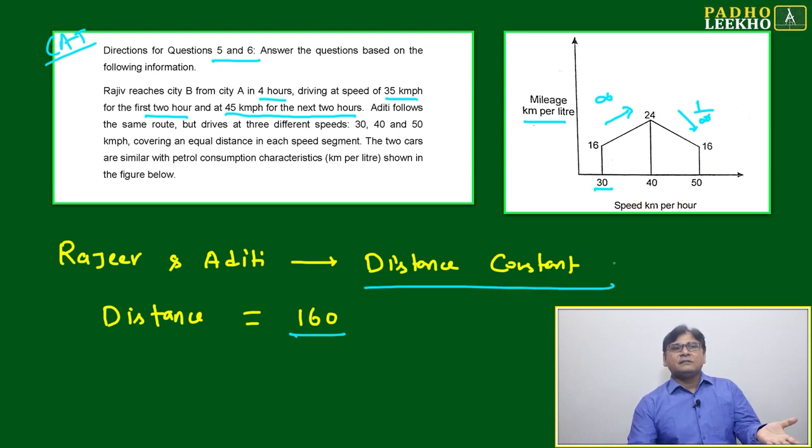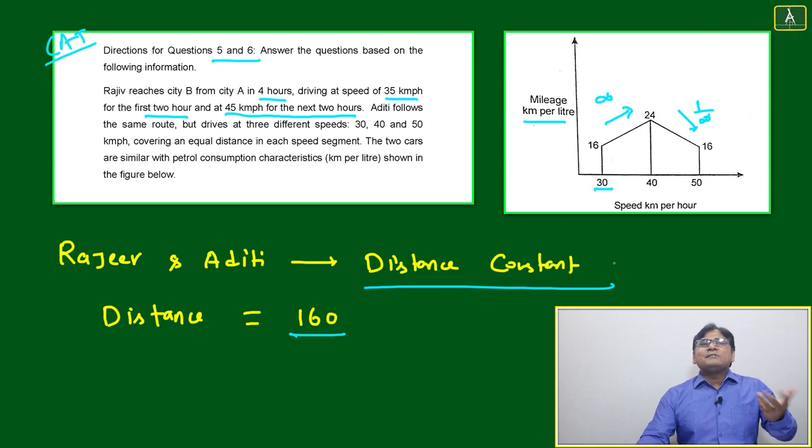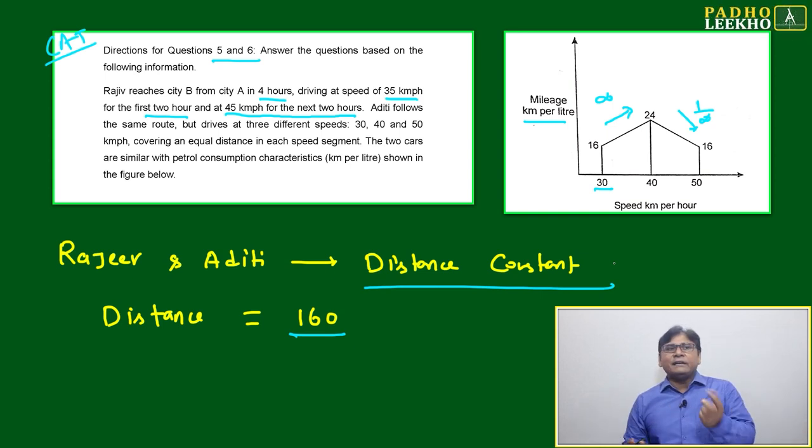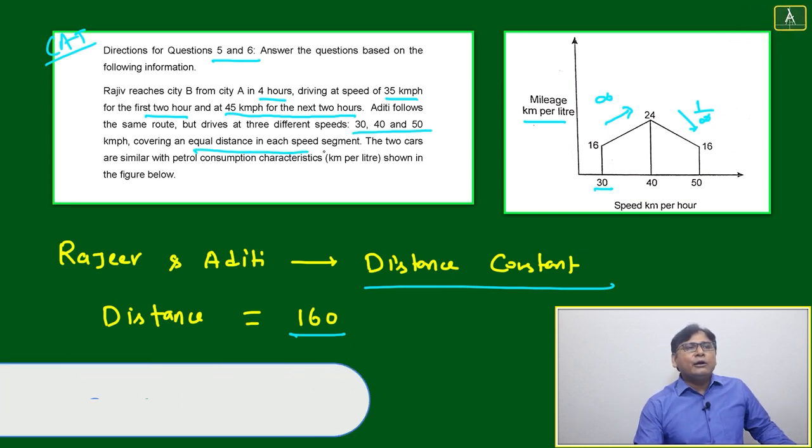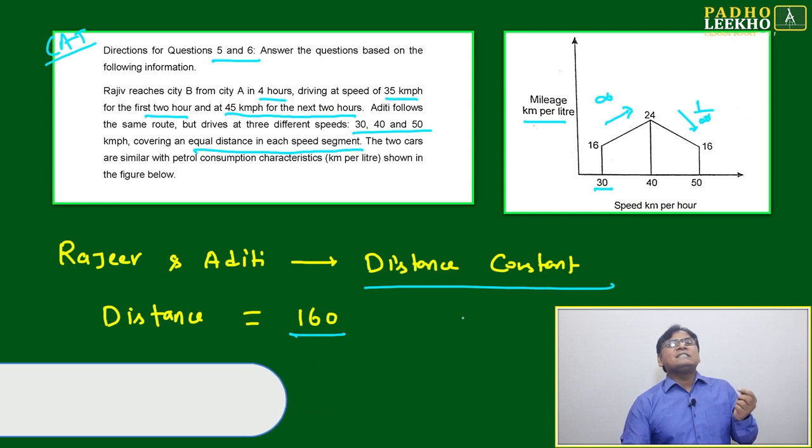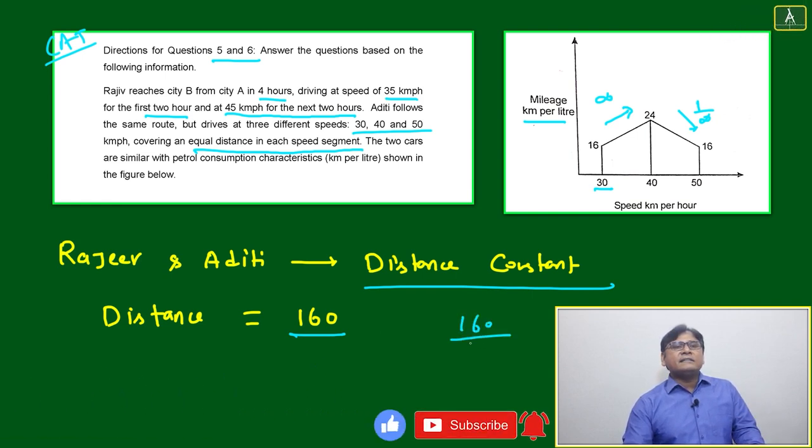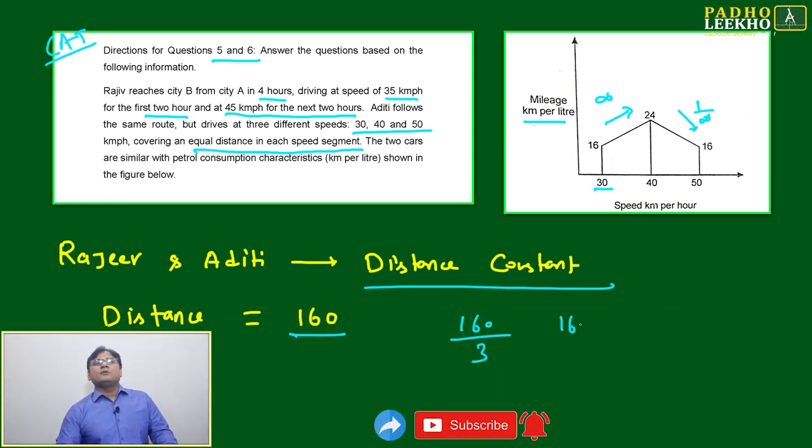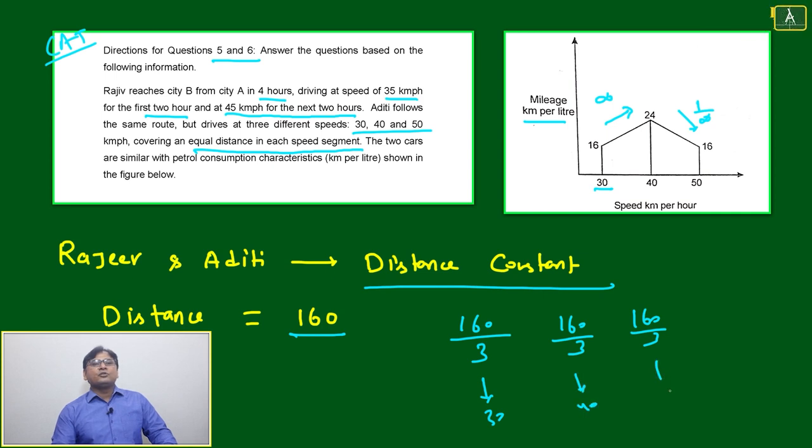Aditi follows the same route. Route is same means distance is constant. Maybe speed will vary, but route is same. Aditi follows the same route but drives at three different speeds: 30, 40, and 50, covering an equal distance in each speed segment. She is going with equal distance. The total distance is 160, then she has divided this total distance in three segments: 160 by 3, 160 by 3, and 160 by 3. Every segment she is going - this is 30 kilometer per hour, this is 40 kilometer per hour, this is 50 kilometer per hour.